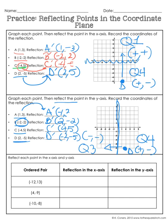Now you're going to try the table at the bottom using the ordered pairs. First you're reflecting across the x-axis, which is what we did up here — so your point is moving up or down to reflect. Then you take the same point and reflect it across the y-axis, moving it left or right. Try using the quadrants and the signs — positive or negative — to help you answer these without having to use a graph.